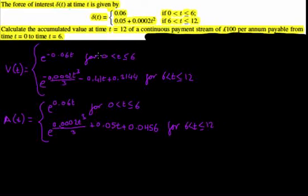Hey everyone, it's Actuary Dude with another question. The force of interest δ(t) at time t is given by this formula. Calculate the accumulated value at time t = 12 of a continuous payment stream of £100 per annum payable from time t = 0 to time t = 6.